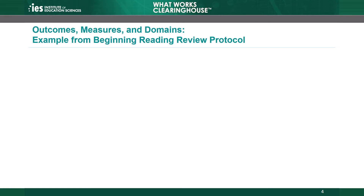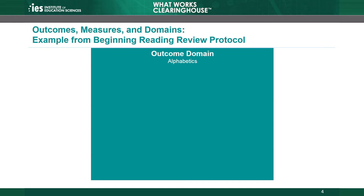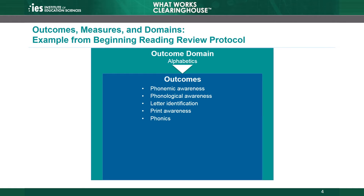This example from the beginning reading review protocol illustrates these definitions and highlights the differences between the three terms. One of the domains included in this protocol is alphabetics. The alphabetics outcome domain includes several important outcomes measured in literacy studies, including phonemic awareness, phonological awareness, letter identification, print awareness, and phonics.